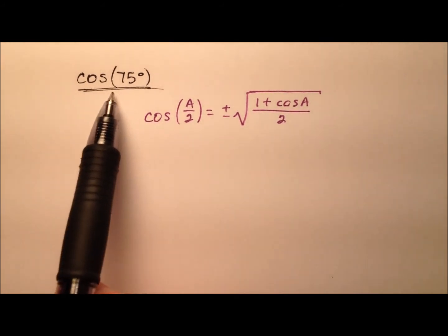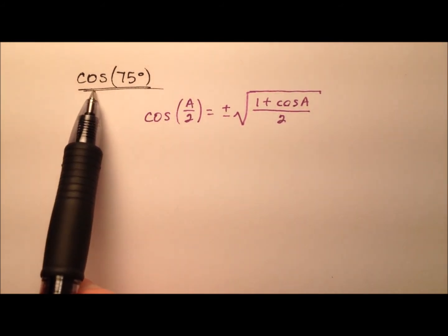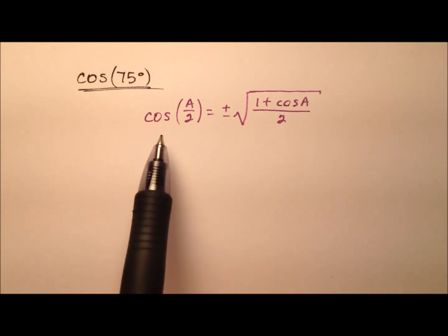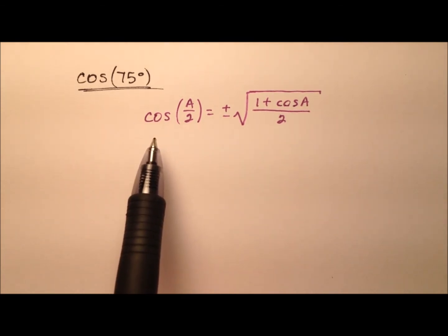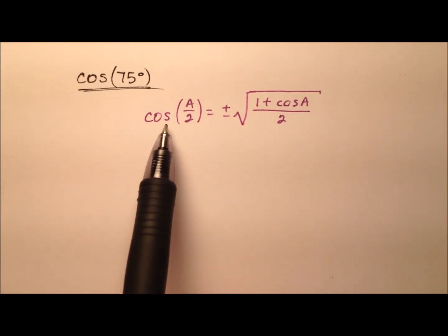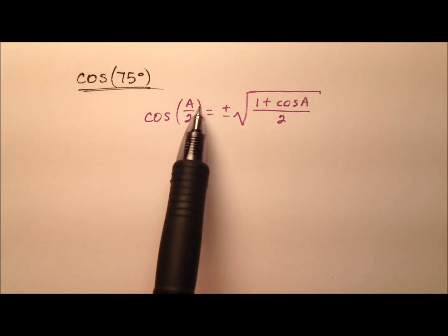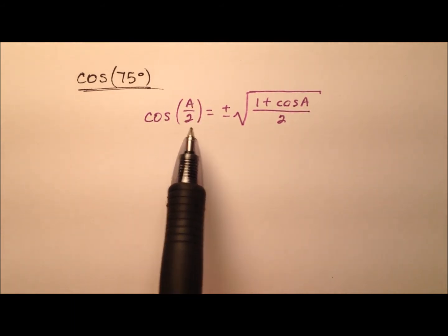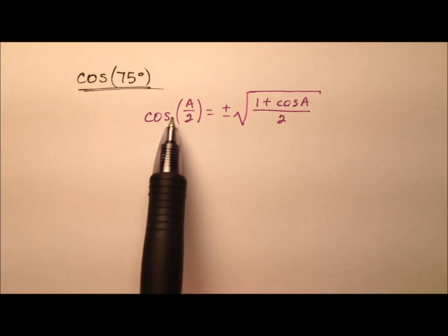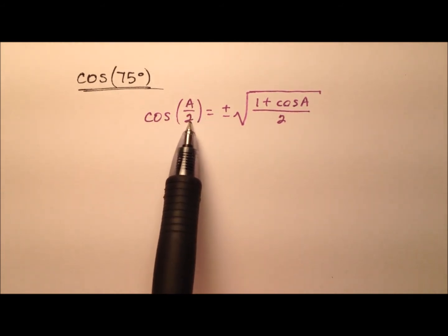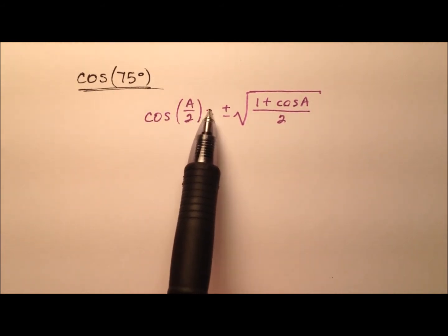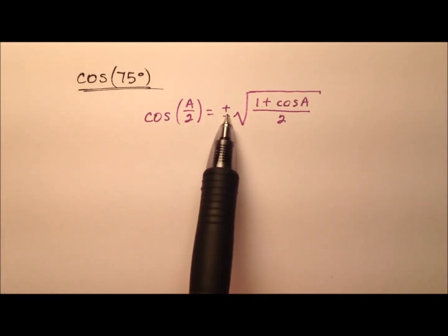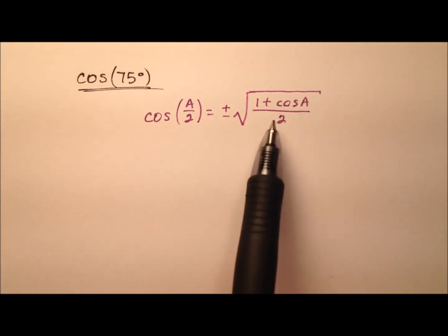In this second approach, we're still looking for the exact value of the cosine of 75 degrees. But instead of using the sum identity for cosine, this time let's use the half angle identity for cosine. So we have the cosine of some angle a divided in half, and that equals plus or minus this square root expression, which includes a cosine of a.